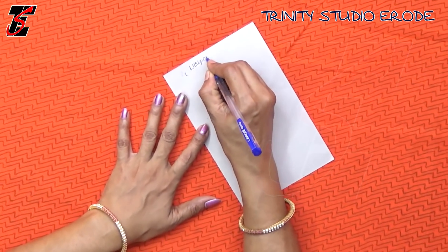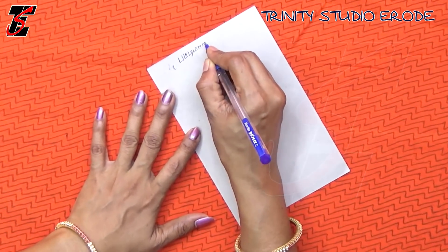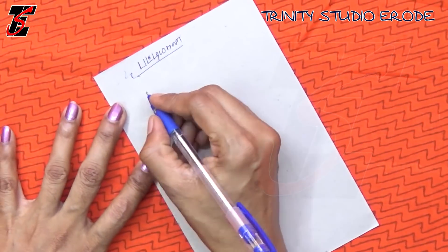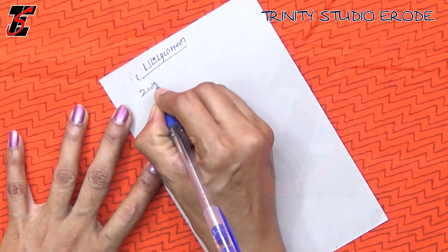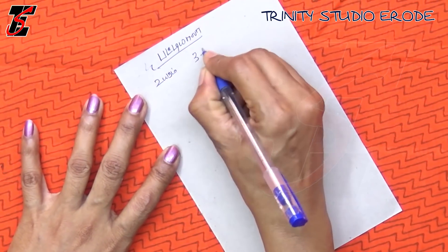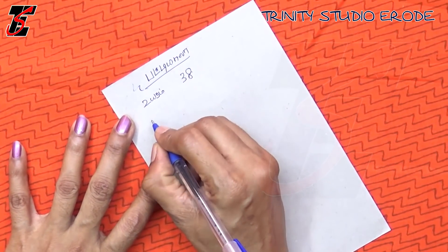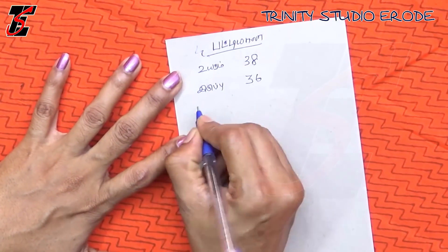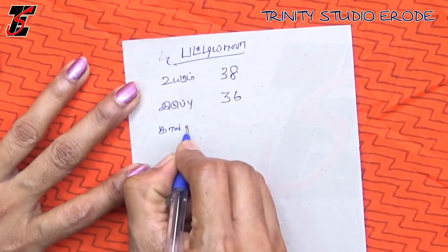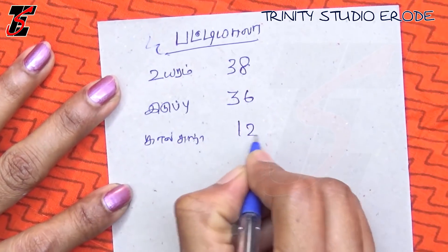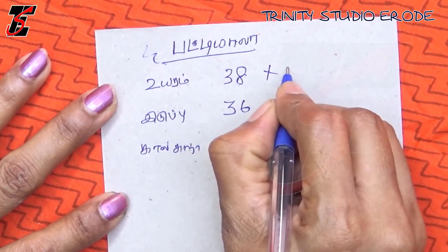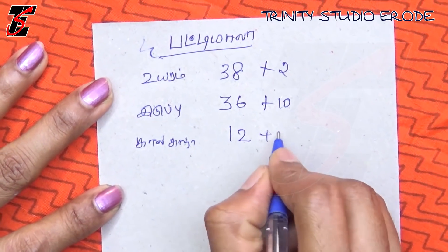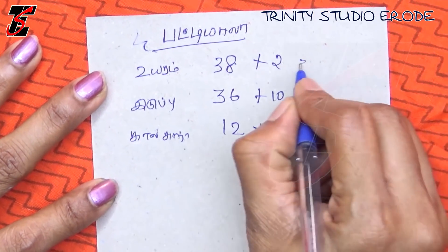How are the measurements? We will see how to calculate the material. If you are using a calculation, the material is 38 inches. Add 2 inches.